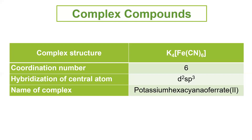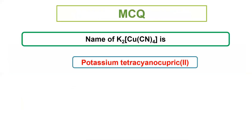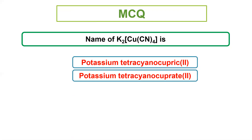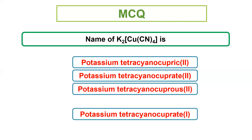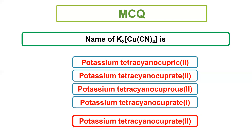Another example: K2Cu(CN)4. The name is potassium tetracyanocuprate. K2 is potassium (cation), and the coordination sphere is the anion, so copper becomes cuprate. Tetracyano because there are 4 cyanide ligands. Potassium gives 2 positive charges, cyanide gives 4 negative charges; 4 minus 2 equals 2, so copper's oxidation state is 2, written as cuprate(II).